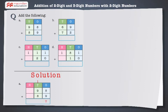Regroup 18 as 100 and 8 tens by inserting the 100's column. Finally, add the 100's: 1 plus 0 plus 0, which is equal to 1. Thus, 98 plus 89 is equal to 187.